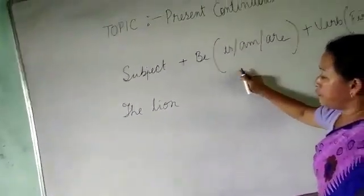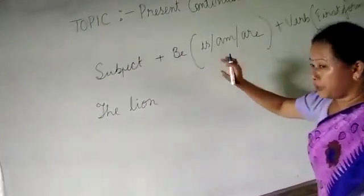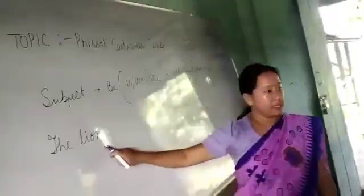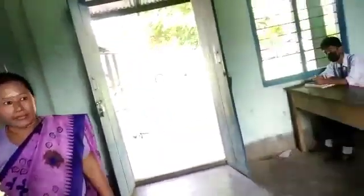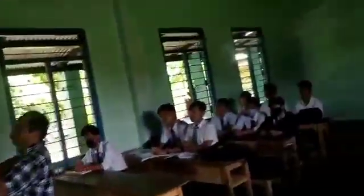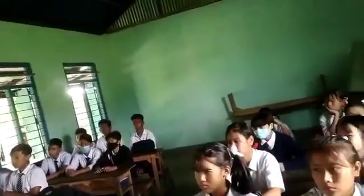Now, this be verb, it depends which be verb we will use. Is, am, or are. It depends on the subject we are writing here. So, the lion. Tell me the number of this guy. Whether the lion is given in singular form or plural form. What is this? Singular or plural form.